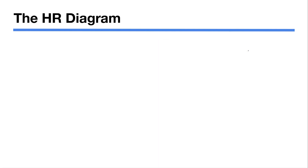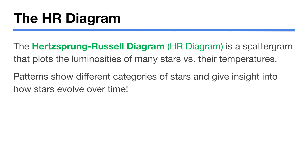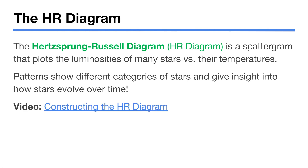Another useful graph you can make by studying starlight is called an HR diagram — a Hertzsprung-Russell diagram. It's a luminosity versus temperature scatter plot. When astronomers were categorizing stars they noticed interesting patterns emerge when plotting luminosity against temperature, and studying it teaches you about how stars evolve. It's a fun visualization made by organizing a group of stars by luminosity and temperature.